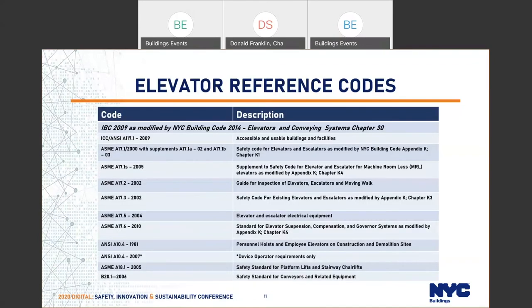Here's a long list of reference codes that we enforce during our plan examination and inspections. This list is pretty long and does not even include the codes for amusement rides, which would make it twice as long. These reference standards are also listed in Chapter 35 of the Building Code. One thing to point out: for the personal hoist code, we are still on the 1981 code, not the 2007 code. The 2007 code is only for device operator requirements.